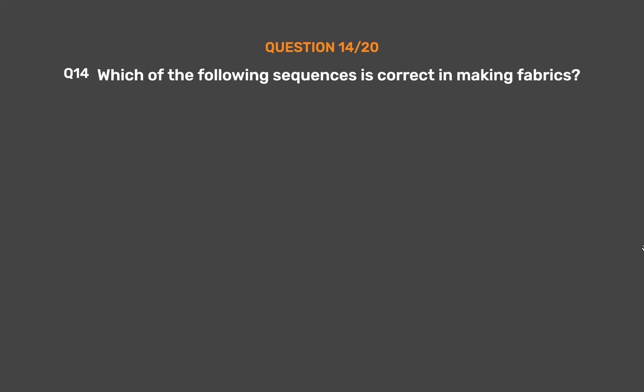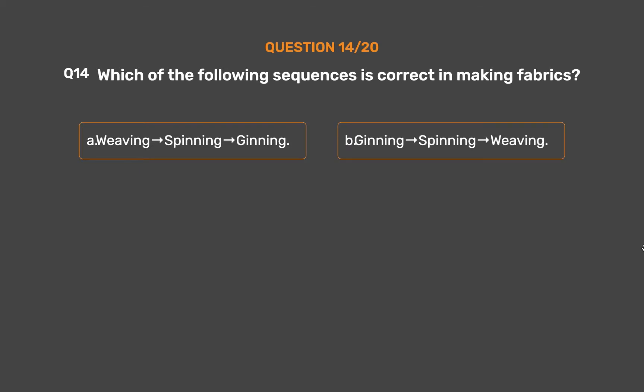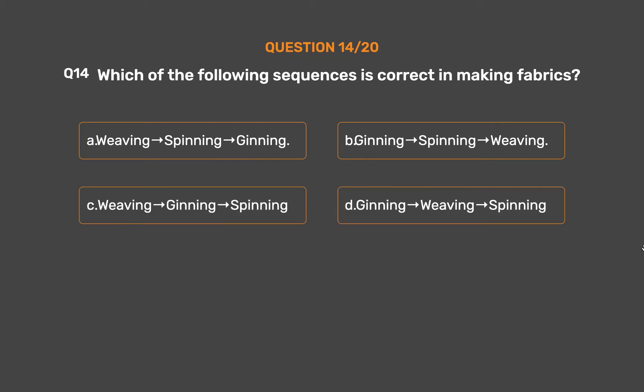Question number 14. Which of the following sequences is correct in making fabrics? Option A, Weaving, Spinning, Ginning; Option B, Ginning, Spinning, Weaving; Option C, Weaving, Ginning, Spinning; Option D, Ginning, Weaving, Spinning.